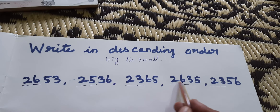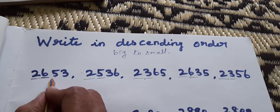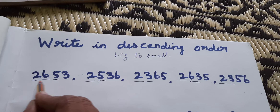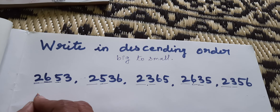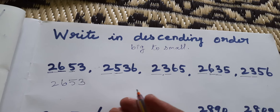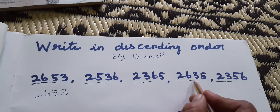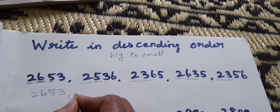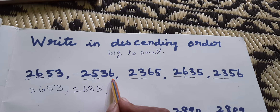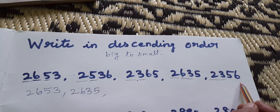2600 and 2600 — both are the same. Next, tens place: 5 or 3? Which one is big? 5. So 2653 is the biggest number. Second number: 2635. Next: 2536. Then: 2365 and 2356.